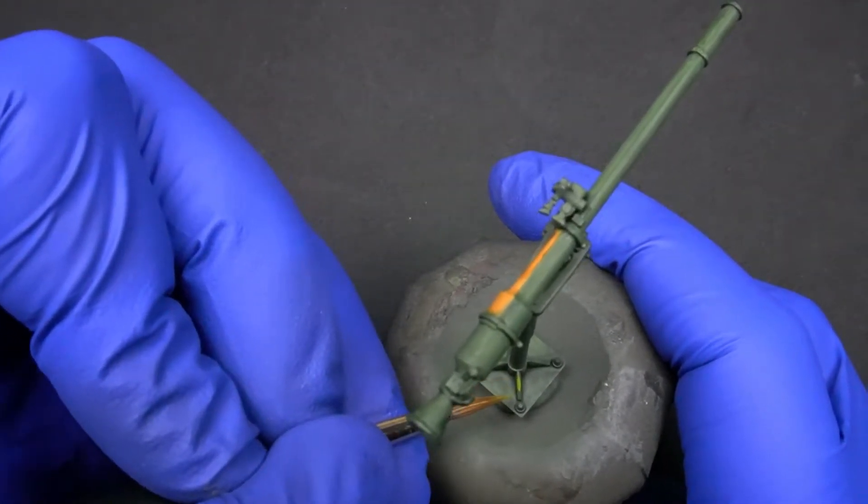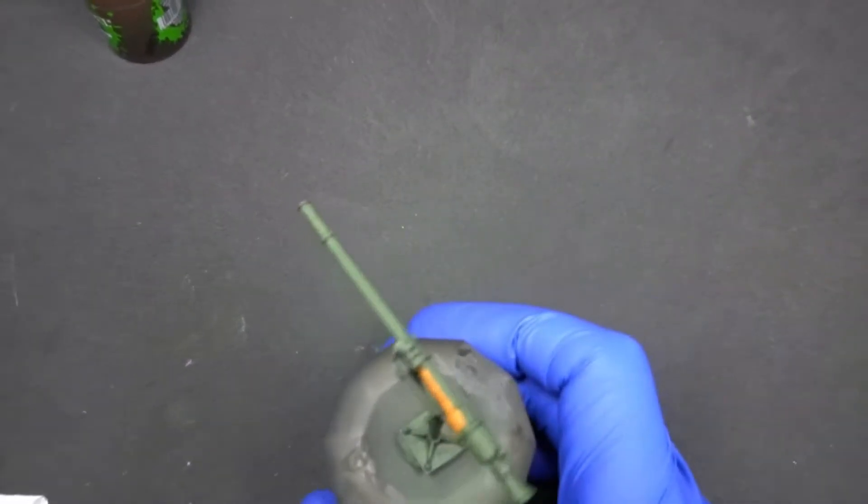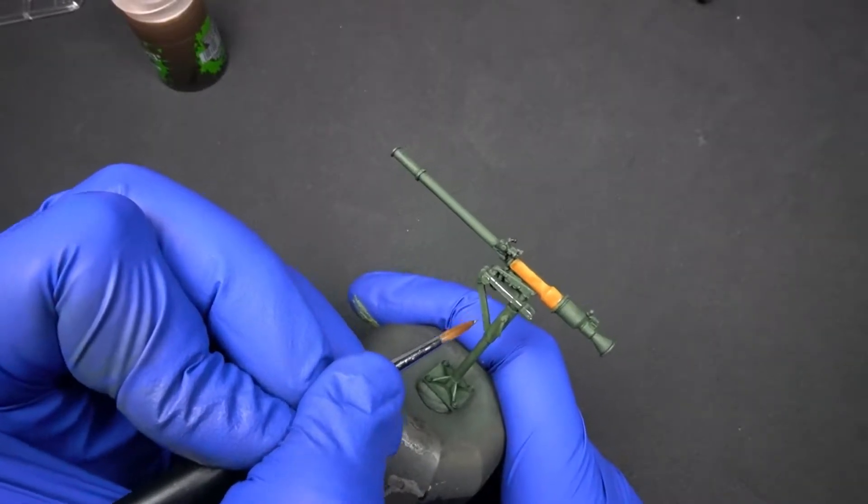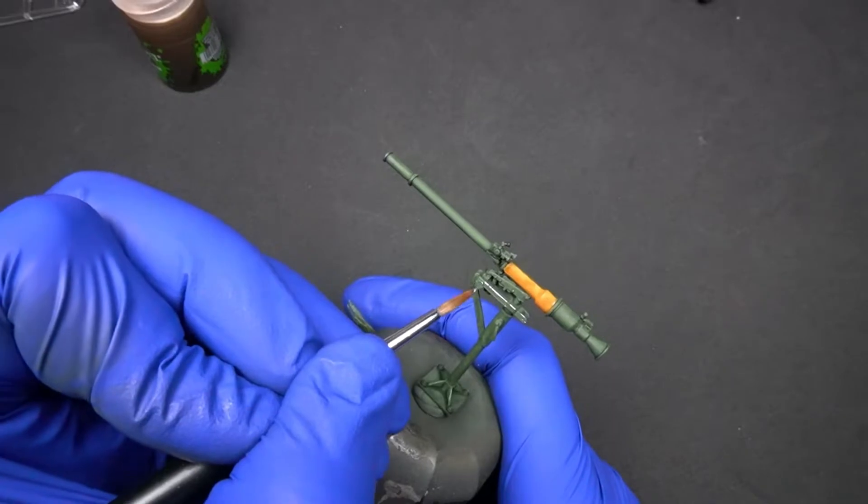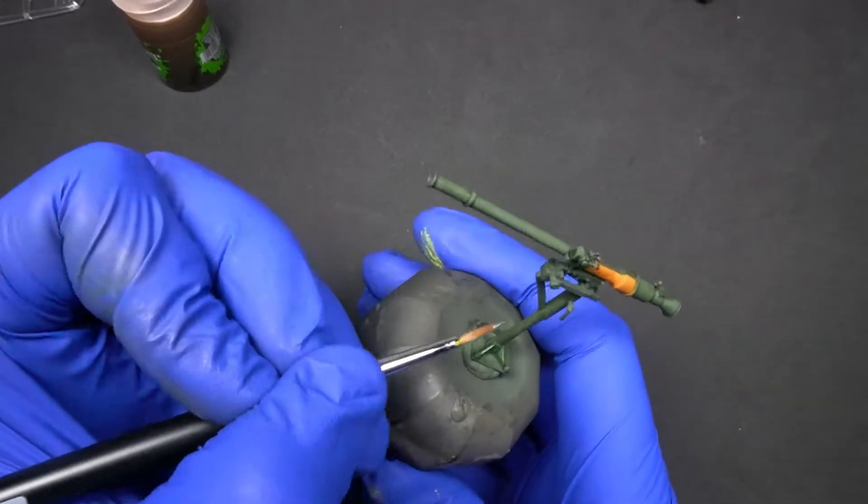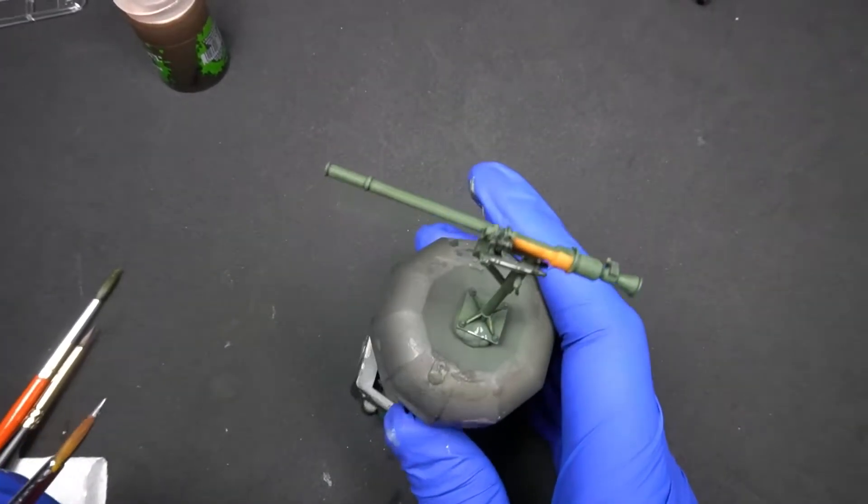So let's add some chipping and scratches to the gun as well. For this, we'll use gunmetal. We apply it on the corners and the low part of this anchor plate.